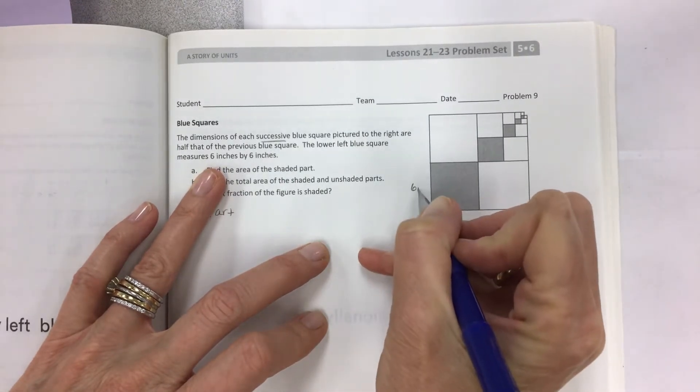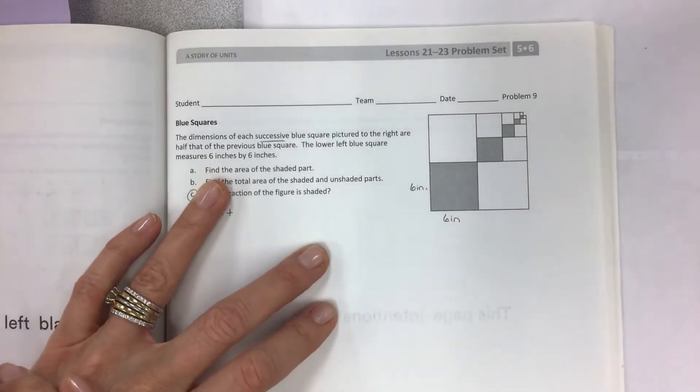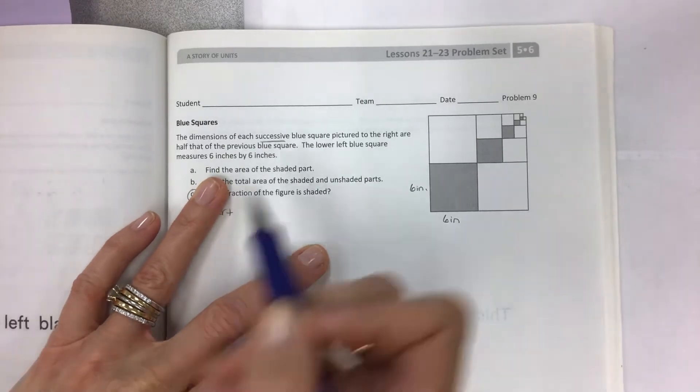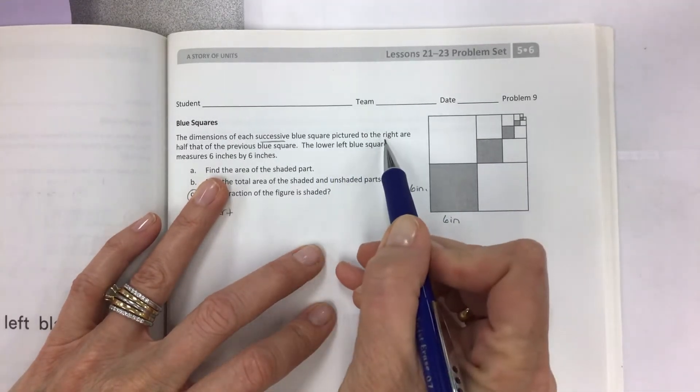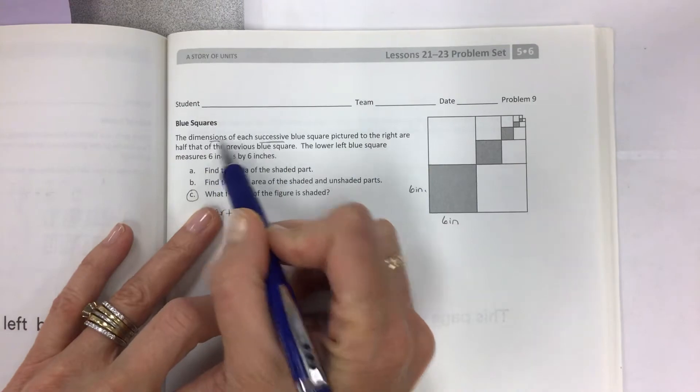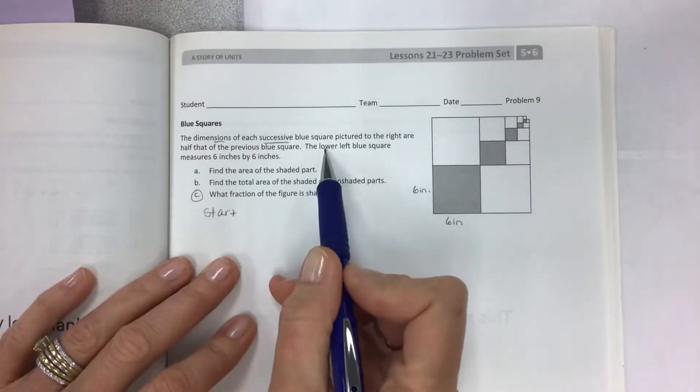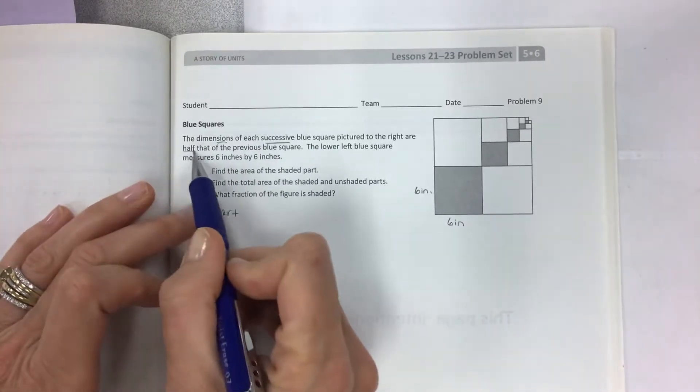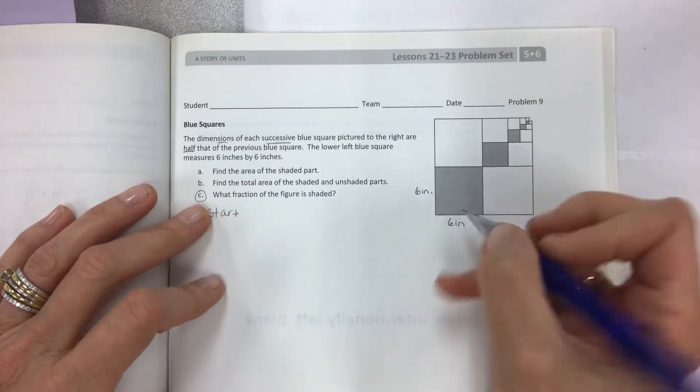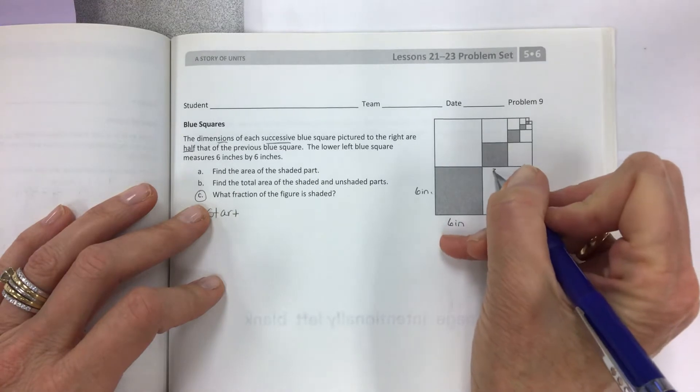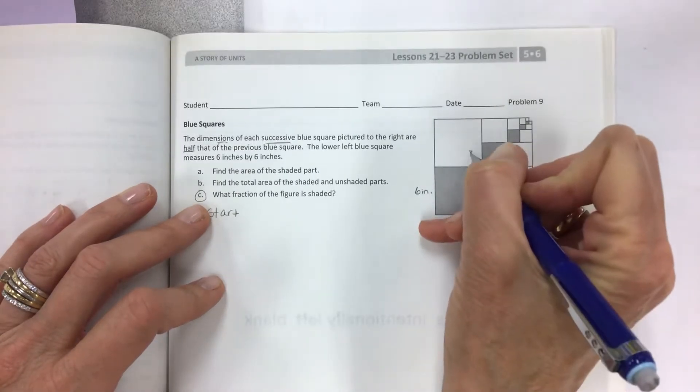Now very important information here. The dimensions of each one as it goes up into the corner, they are half. The dimensions are half. So if this is six by six, this is three by three. And this one is half of three.